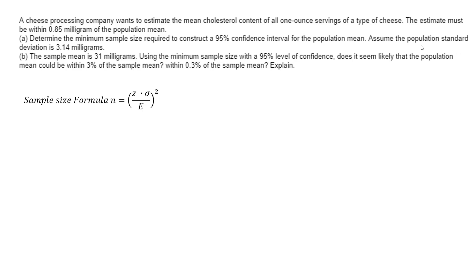When you know the population standard deviation, that's how you know you're going to use a z. If you did not know the population standard deviation, then you can't use a z, you have to use the t.